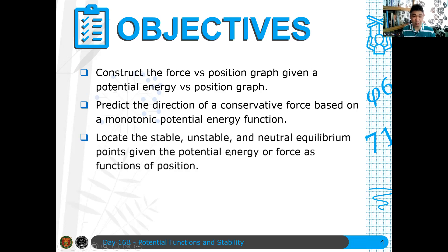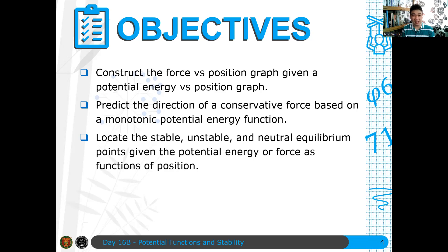The third objective is to locate the stable, unstable, and neutral equilibrium points given the potential energy or force as functions of position. These equilibrium points are special because they tell us something about the dynamics of the particle — about how the particle moves, or whether it is at rest. You can gain a lot of knowledge about these points, including the so-called turning point, which we will discuss as we go along.